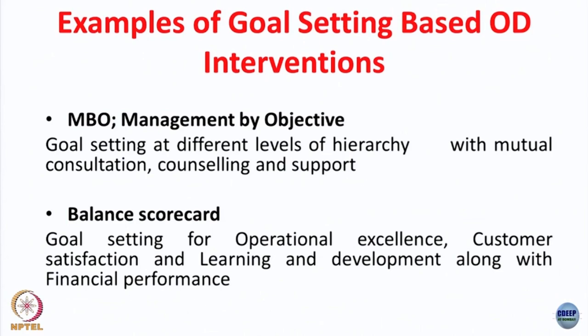Financial performance indicators are lagging indicators — strong predictors of past performance. How an organization will perform in future is reflected in learning and development goals and customer satisfaction goals. Operational excellence and efficiency are also linked to future profitability. So operational excellence, customer satisfaction, and learning and development are leading indicators that help predict future organizational performance. Balanced Scorecard involves a combination of leading indicators — operational excellence, customer satisfaction, learning and development — and lagging indicators like financial performance.